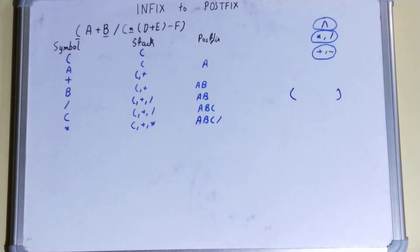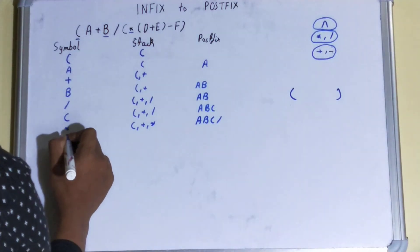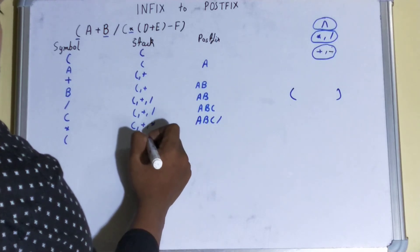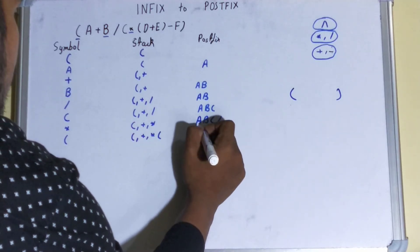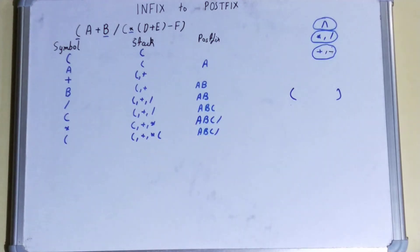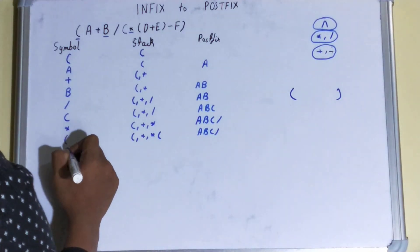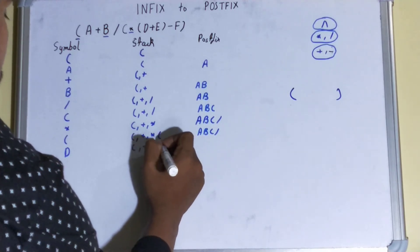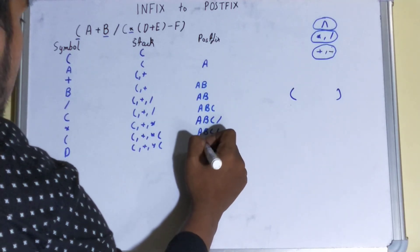I hope that rule is clear. Next we encounter another opening bracket, so we just place it inside the stack and the postfix expression stays as it is. After that, D comes in. Since D is an operand we place it in the postfix column.